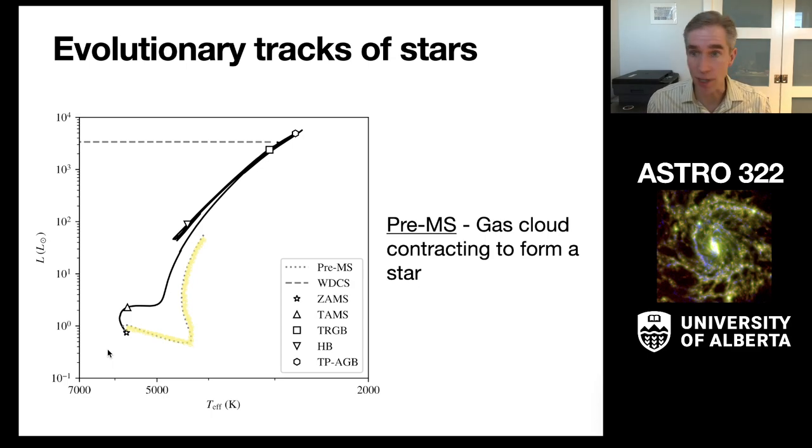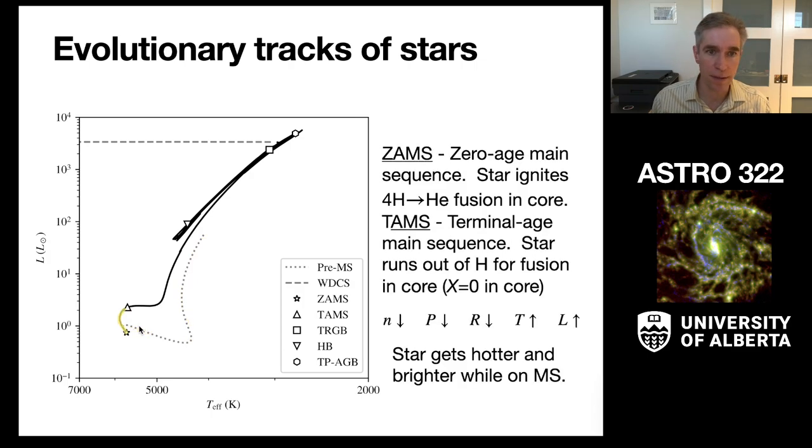The first step in stellar evolution is star formation, called the pre-main sequence phase. That happens when a gas cloud collapsed down and eventually forms a star. You should know that we start out with a gas of hydrogen, mostly hydrogen, a little bit of helium, and then a trace amount of metals. It collapses down to form a gas cloud that eventually ignites nuclear fusion. For a one solar mass star, it follows this track down, does a little hook up here, and lands right here on the zero age main sequence, which is when a star ignites hydrogen into helium fusion in its core.